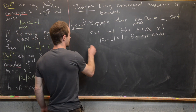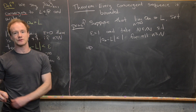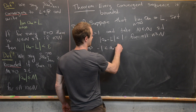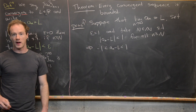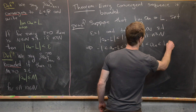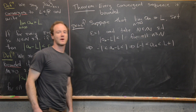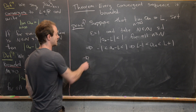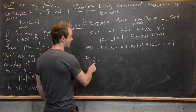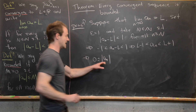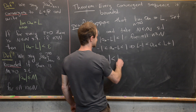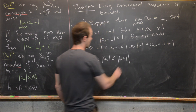We can take this inequality and remove the absolute values: a_n minus L is between negative 1 and 1, or equivalently, a_n is between L minus 1 and L plus 1. Using this, we can write inequalities involving absolute values. We know that 0 ≤ |a_n|, which is less than |L + 1|.